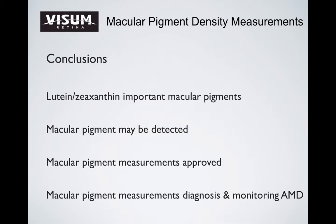In conclusion, lutein and zeaxanthin are important macular pigments. Macular pigments may be detected with current techniques, and measurement technology has been validated. Macular pigment measurements may be useful for the diagnosis and monitoring of AMD. Thank you.